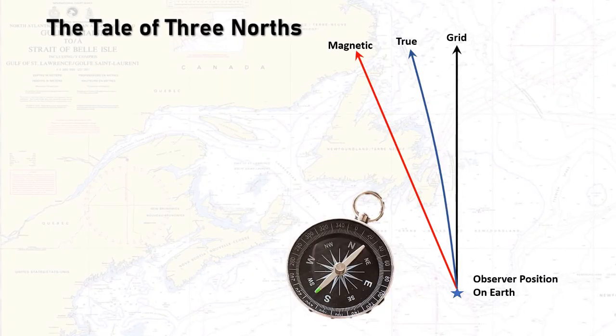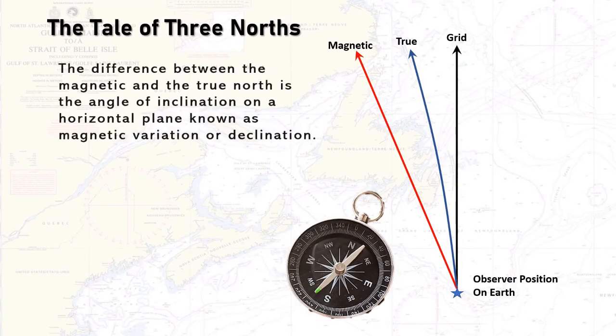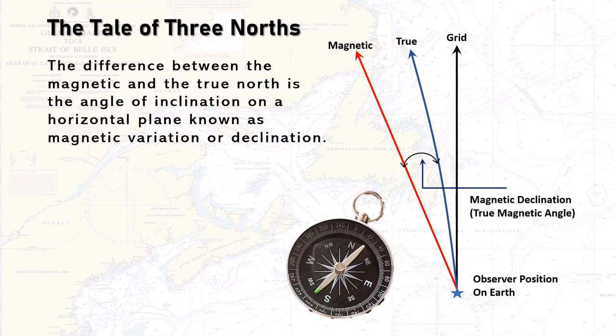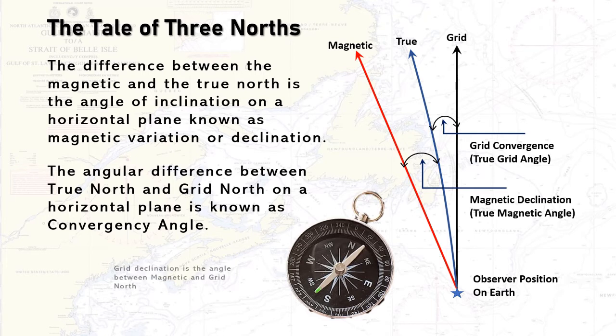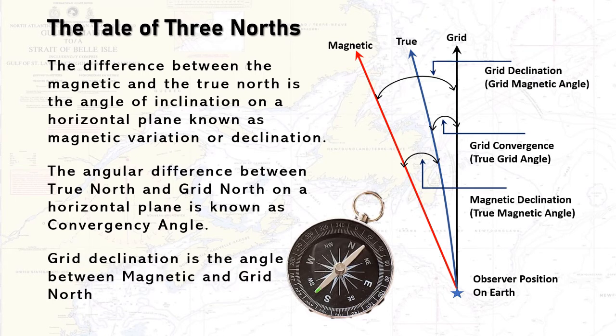The three norths are important to map readers and navigators in helping them understand topography. The difference between magnetic north and true north is the angle of inclination on a horizontal plane, mostly referred to as magnetic variation or declination. The angular difference between true north and grid north on a horizontal plane is known as convergence angle or grid convergence.